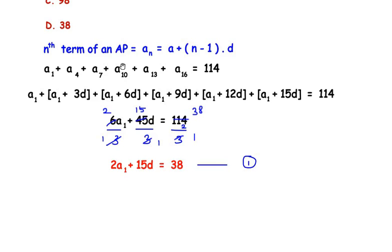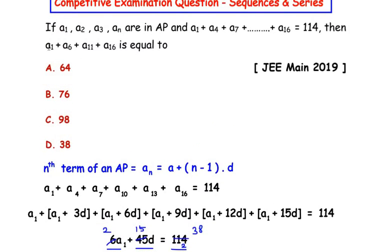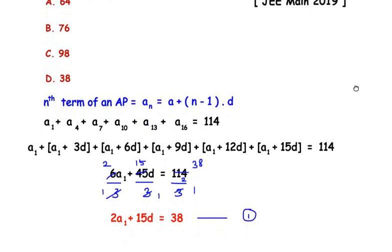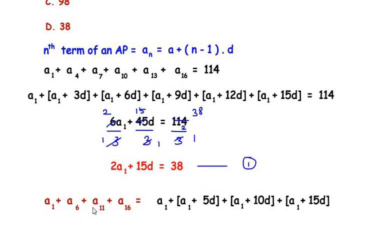Once we have done this, we are going to repeat the same steps for the given series, that is for a1 plus a6 plus a11 plus a16. The first term a1 stays the same, plus a6 using this formula we have the first term is a1 plus 6 is the n, so 6 minus 1 gives us 5 times d, plus for a11 we have a1 plus 10d, and lastly we have a16 which is a1 plus 15d.